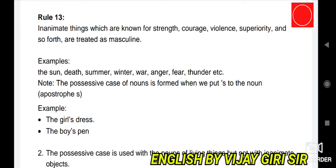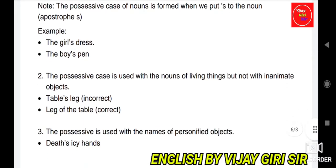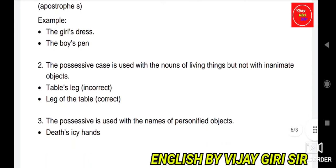Note: The possessive case of a noun is formed when we add apostrophe S to the noun — for example, 'the girl's dress', 'the boy's pants'. The possessive case is used with nouns of living things but not with inanimate objects. For example, 'table's leg' is incorrect; the correct form is 'leg of table'.